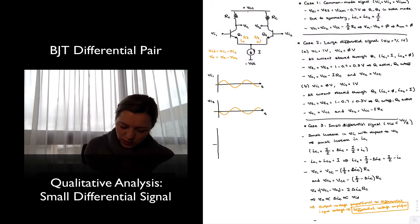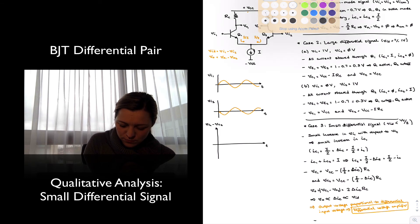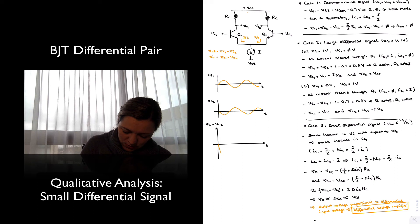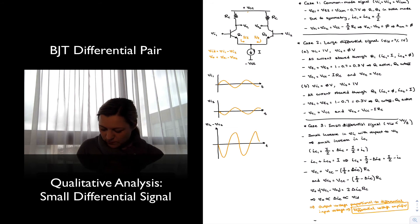Then my output signal, my output voltage, it's going to be V_C1 minus V_C2. It's going to be something like this. So basically proportional to the change to the differential input signal V_IN1 minus V_IN2.